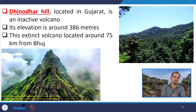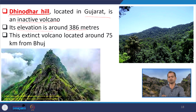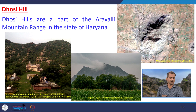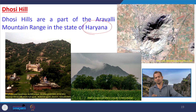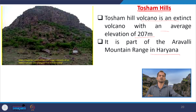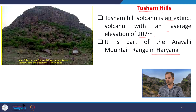Dhinodhar Hills in Gujarat is an extinct volcano with an elevation of around 386 meters, located about 75 kilometers from Bhuj. Dhosi Hill in the Aravalli hill range in Haryana is also an extinct volcano — you can see the crater in Google Earth imagery. Tosham Hill, also in Haryana in the Aravalli range, is another extinct volcano with an average elevation of 207 meters. So in the Indian context, we have dormant volcanoes, active volcanoes, extinct volcanoes, and mud volcanoes.